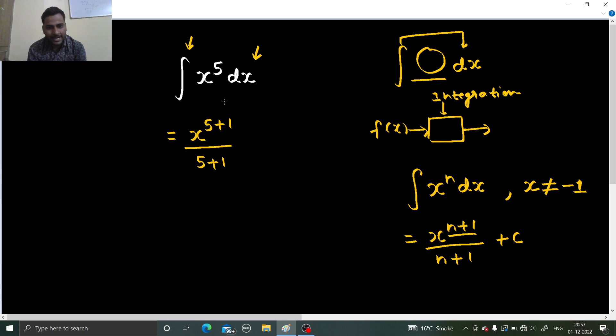Whenever you're doing indefinite integration, that means no upper and lower limits are there, always put a constant C at the last. This is because it's the reverse process of differentiation, so we need to add a constant C. So this is x power 6 divided by 6 plus C. This is how we did our first problem on integration.